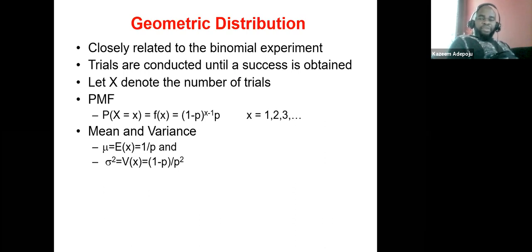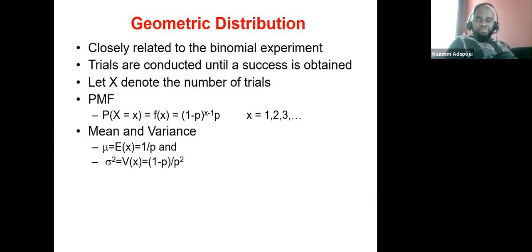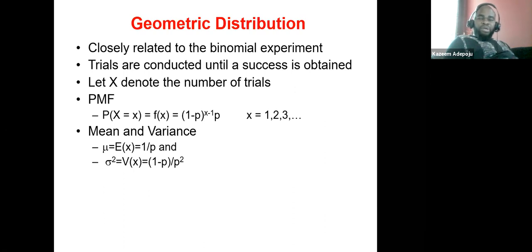Under binomial distribution, it is a probability distribution for describing a binomial experiment. A binomial experiment is characterized by dichotomous outcomes — there are two possible outcomes. In geometric distribution, we are also dealing with a binomial experiment that could have two possible outcomes, but the interest is different from binomial distribution.